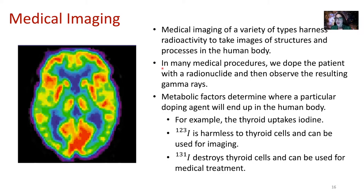Let's remember emission of photons. Metabolic factors determine where a particular doping agent will end up in the human body. For example, I have experience with this one in particular. The thyroid uptakes iodine, and I have a problem with my thyroid. I actually had an overactive thyroid which was killed by a radioactive iodine treatment. Because our thyroid uptakes iodine, you can use different isotopes of iodine in order to treat or image thyroid processes.